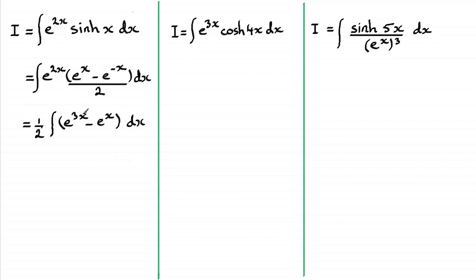So integrating e to the three x, well that's going to be e to the three x over three, and the integral of minus e to the x, well it's just going to be minus e to the x. So you should have that result there, and your constant of integration c.